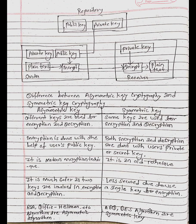This is the figure of symmetric key cryptography. Now let us look at the difference between asymmetric key cryptography and symmetric key cryptography. In asymmetric key cryptography, different keys are used for encryption and decryption, while in symmetric key cryptography, the same key is used for encryption and decryption.